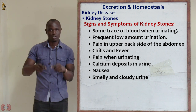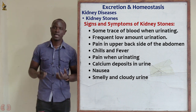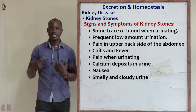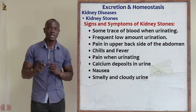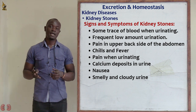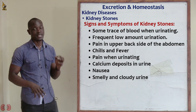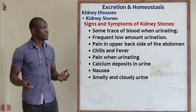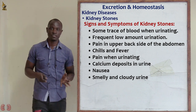If you try to push more urine out, there is pain on the upper backside when passing urine. There is also pain when urinating and pain in the upper backside. These people also experience chills and fever. Apart from that, there are calcium deposits detectable in the urine upon testing, as well as nausea and fever-like symptoms.